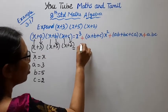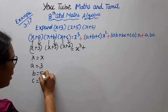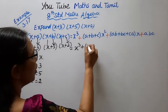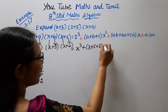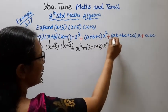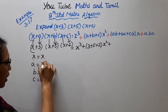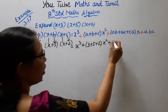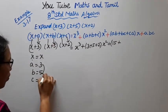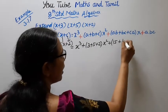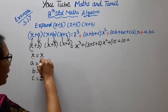So we get x-cubed plus (a plus b plus c): 3 plus 5 plus 2, into x-squared. Then (ab plus bc plus ca): ab is a into b, 3 into 5 equals 15; bc is 5 into 2 equals 10; ca is 2 into 3 equals 6. So ab plus bc plus ca equals 15 plus 10 plus 6.